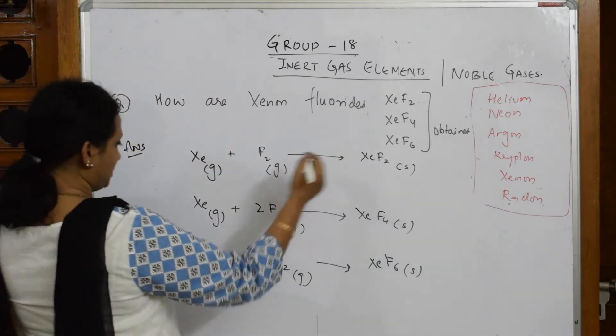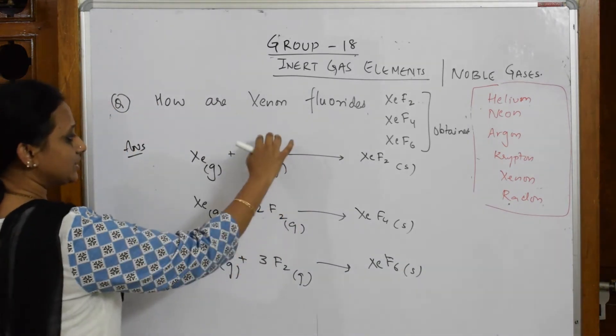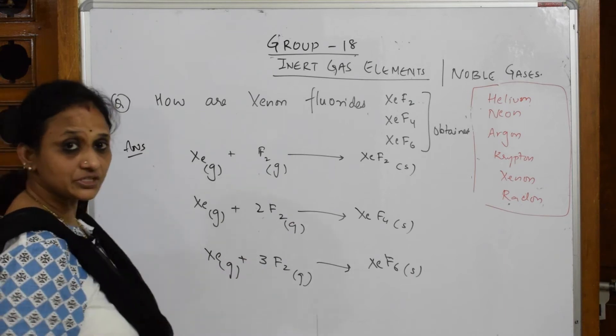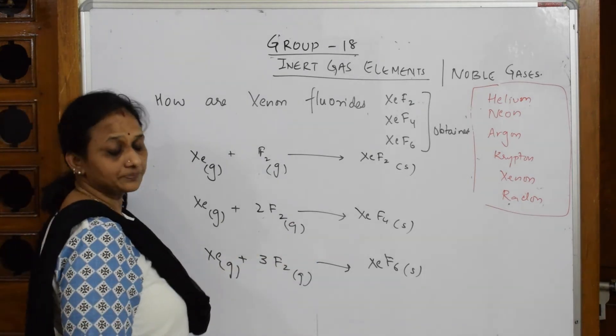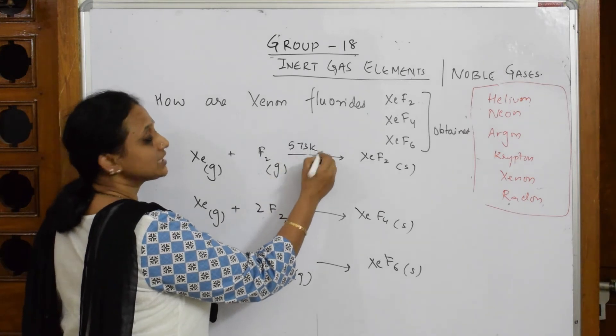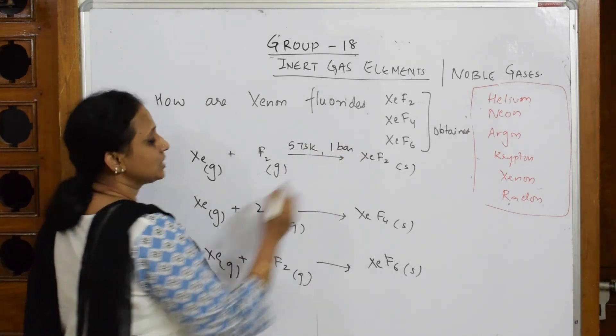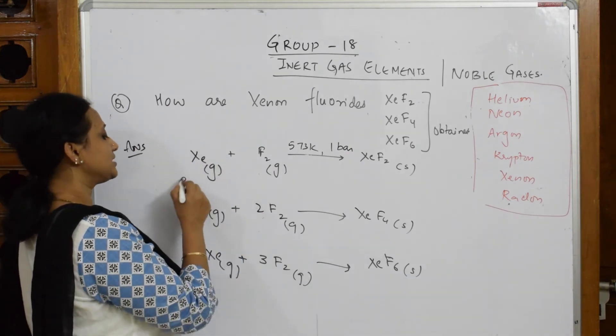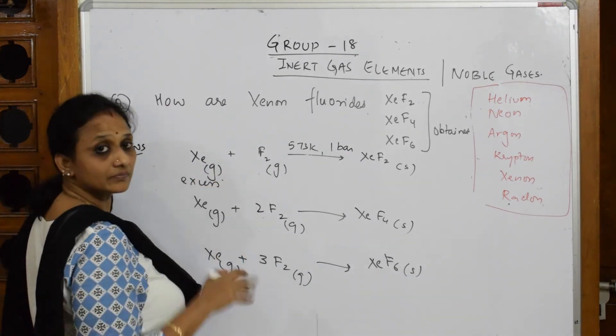Now let's see, I've written the physical states everywhere. I have written the balanced equation everywhere. I need to write the pressure. This particular thing occurs at the temperature of 573 Kelvin and one bar. Here the amount of xenon taken is excess.